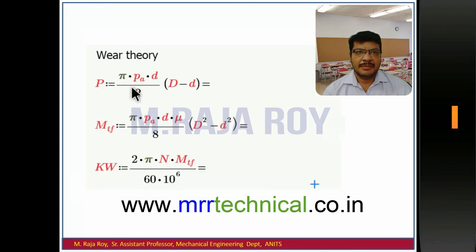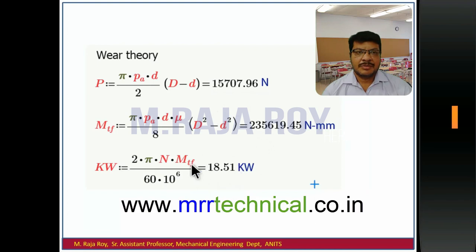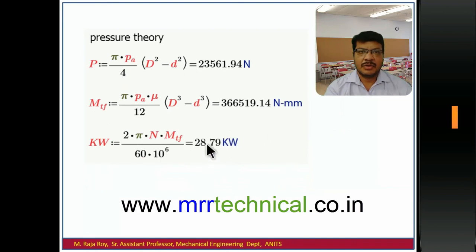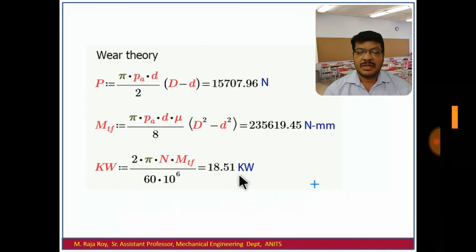For uniform wear theory, using the corresponding equations for operating force and torque transmitting capacity, and the same power formula, we get the answers. Under uniform wear theory we get less power — 18.51 kW compared to 28.79 kW under uniform pressure theory. This shows that when the clutch is worn out, the power transfer capacity of the clutch decreases.